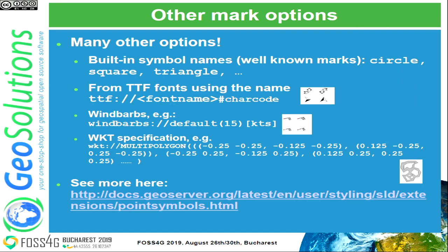Marks have many options in GeoServer. There are built-in symbol names from the SLD specification — circle, square, triangle, times, etc. You can use a TrueType font with the syntax 'ttf://fontname' and a character code — fonts like Wingdings contain little symbols instead of letters. There's a wind barbs generator, WKT (Well-Known Text) for specifying custom geometries, and a way to build symbols by specifying how a pointer should move, similar to turtle graphics. More symbologies are available at the documentation link.